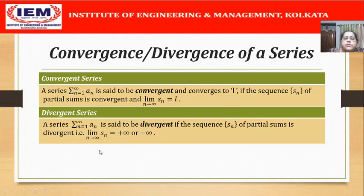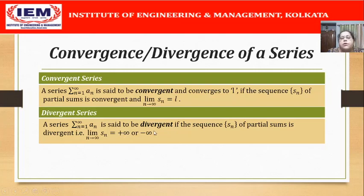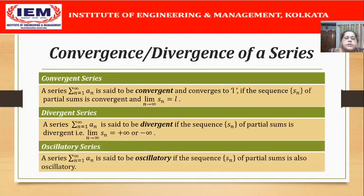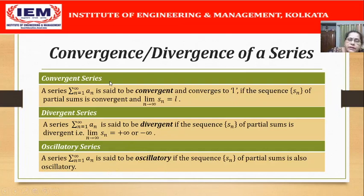Similarly, a series is said to be divergent if the sequence {S_n} of partial sums is divergent — that is, if lim S_n as n tends to infinity is +infinity or -infinity. And of course there is the third case: oscillatory series. A series is said to be oscillatory if the sequence of partial sums is also oscillatory — that means the series is neither convergent, so it doesn't have a finite sum, nor divergent, so it doesn't have a unique infinite sum either.